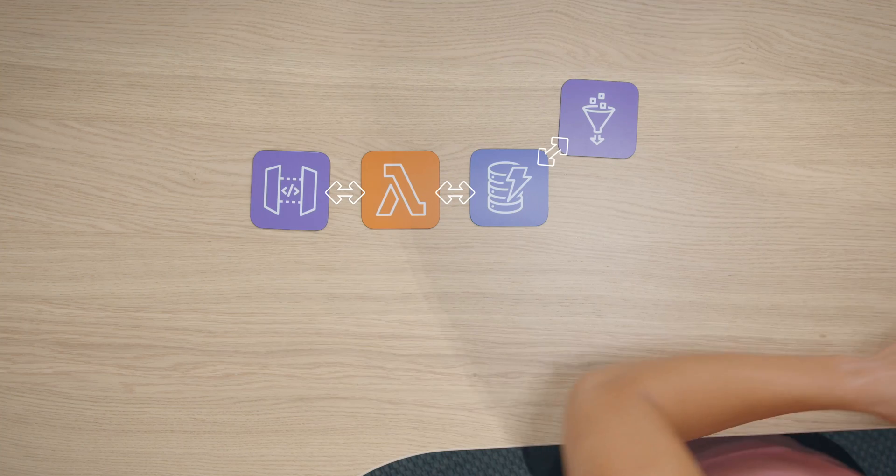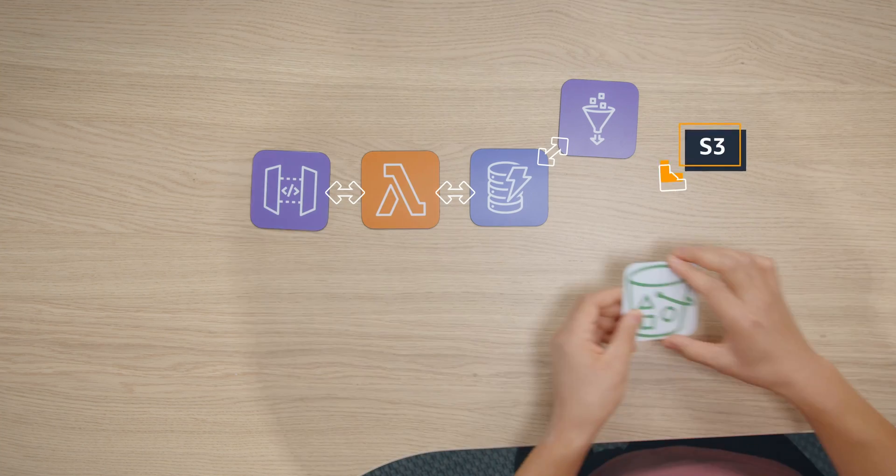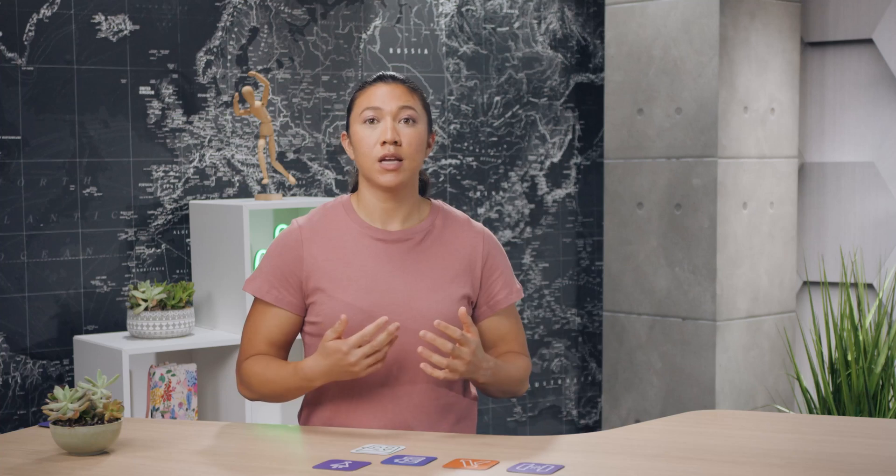The data that Glue extracts will go into Amazon S3 for analysis. S3 can store front-end code and images, and even host a static website. S3 can also store data, which is useful when you don't know its structure or you're collecting it from multiple sources. S3's unlimited storage capacity makes it great for big data applications.